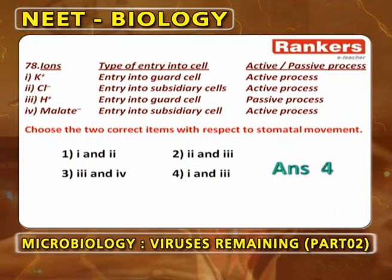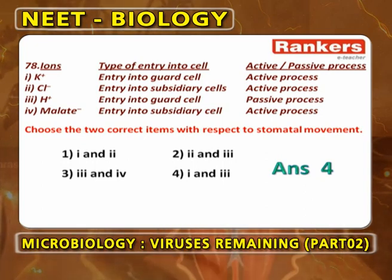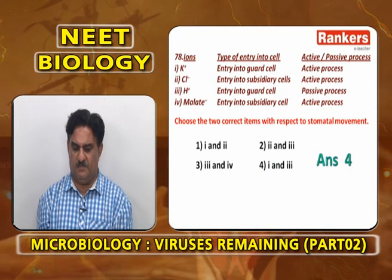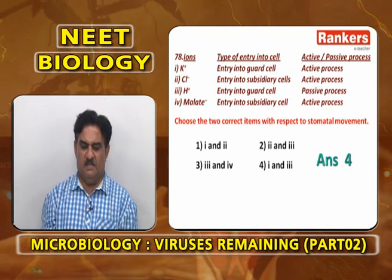Ions, type of entry into cells — active or passive: K⁺ ions enter guard cells by active process — correct. Cl⁻ enters guard cells — active process is wrong (it is passive). H⁺ enters guard cells — passive method is wrong (H⁺ is actively pumped out). Malate ions enter subsidiary cells by active process is wrong.